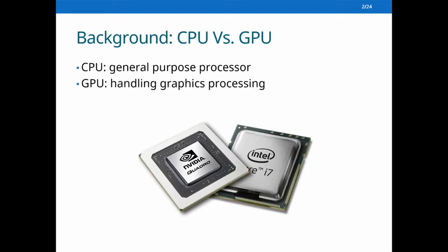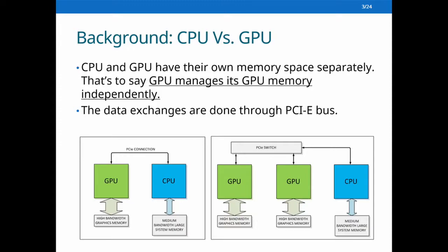As we all know, CPU is a general-purpose processor — it can do any kind of computation. GPU stands for Graphic Processing Unit; it's a special-purpose processor designed for handling graphic processing. CPU and GPU have their own separate memory spaces, meaning GPU manages its memory independently, and data exchange is done through the PCIe bus.